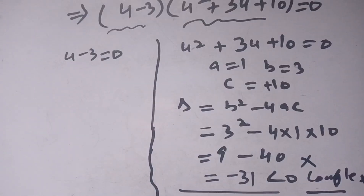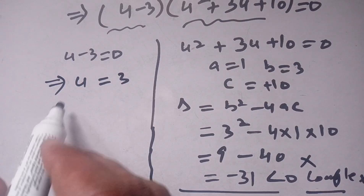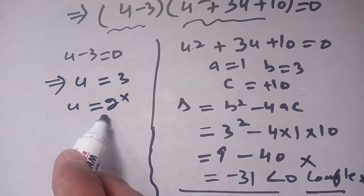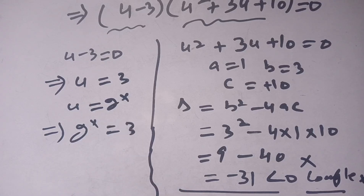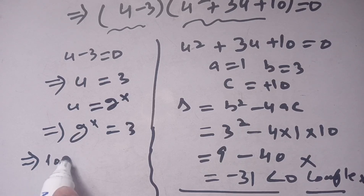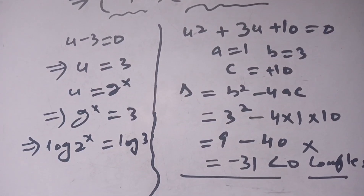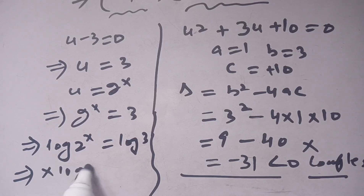We consider only u minus 3 equals 0, which gives u equals 3. Since u equals 2 to the power x, we substitute to get 2 to the power x equals 3. Taking the log of both sides: log of 2 to the power x equals log of 3. By the logarithm power property, x times log 2 equals log 3.